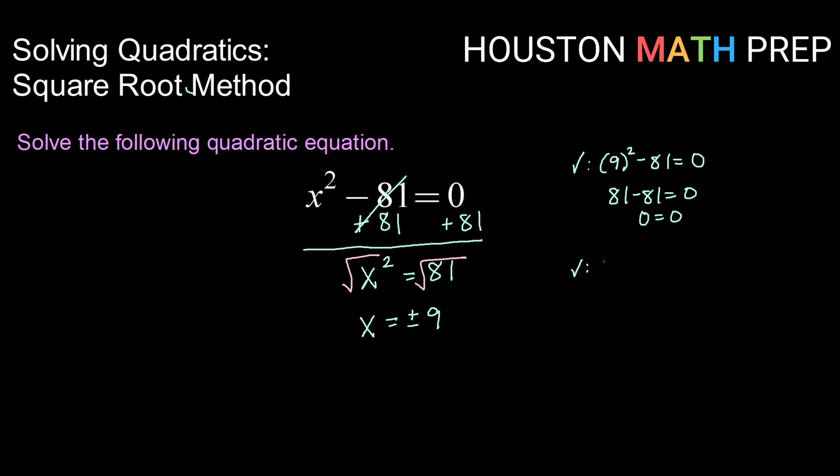However, it is also true that negative 9 squared minus 81 equals 0 gives me a true solution, because negative 9 squared is also 81. So we get 0 equals 0 for that one as well.